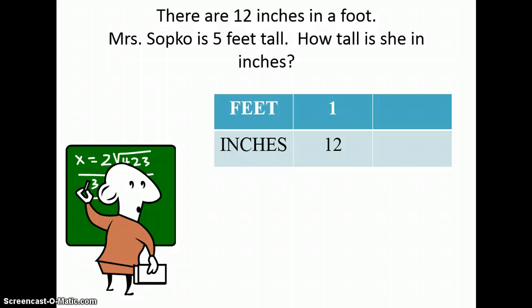Now I'm going to look back at the problem and ask myself, what other information have I been given? You'll notice that Mrs. Sapko is 5 feet tall, so I'm going to put that 5 in the foot row. Now all I need to do is ask myself, how do I get from 1 to 5? I multiply by 5. So if I need to multiply by 5 to get from 1 foot to 5 feet, then I need to do the same thing with 12 inches. I'm going to multiply that by 5 and get 60 inches.